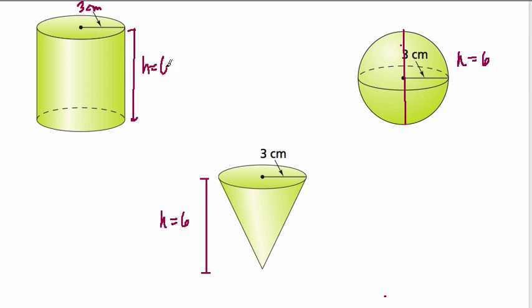So let's pause for a moment and make a prediction. If the height is equal in all of these and the radius is equal in all of these, which one will hold the most stuff? Which one will have the greatest volume?